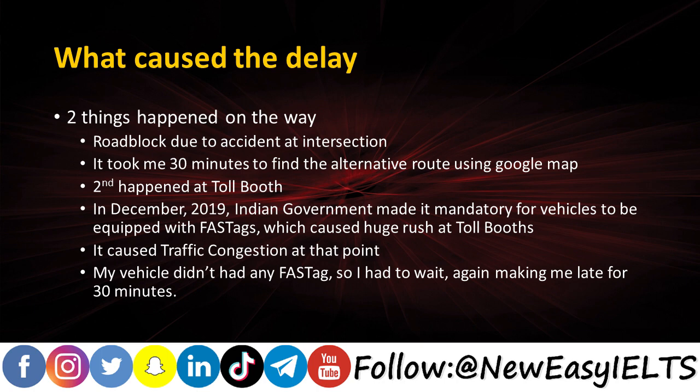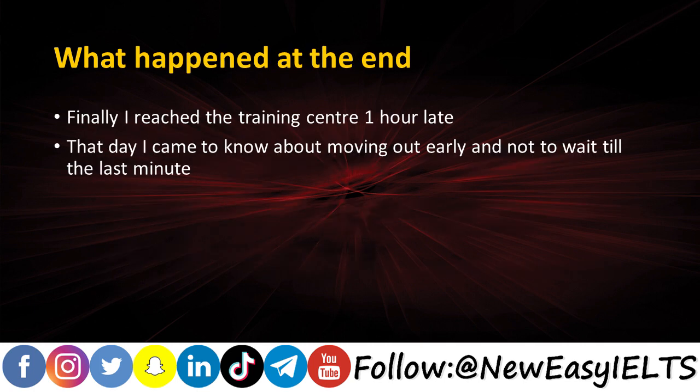Two things happened on the way. First, there was a roadblock due to an accident at an intersection, which took me about 30 minutes to find an alternative route using Google Maps. Second, at the toll booth, the Indian government had made it mandatory for vehicles to be equipped with FASTag, which caused a huge rush. My vehicle didn't have FASTag, so I had to wait — again losing 30 minutes. Finally, when I reached the training center I was already one hour late, and that day I learned the lesson of moving out early and not waiting till the last minute.